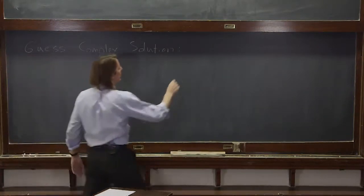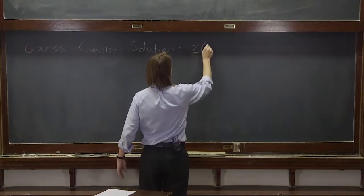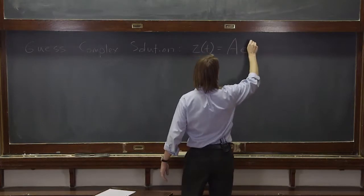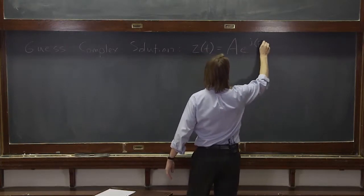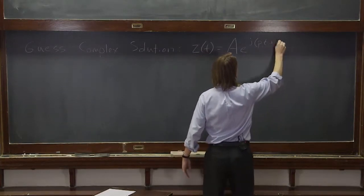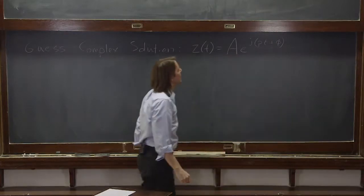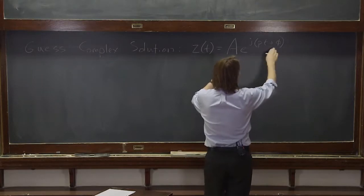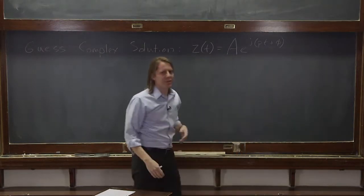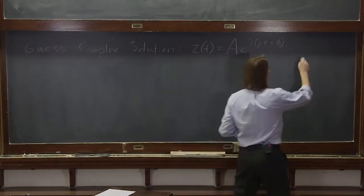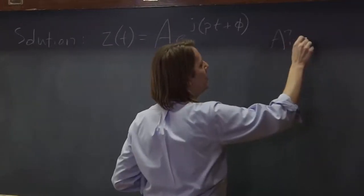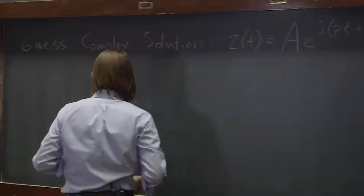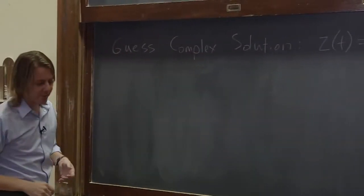What should we guess? Well, why don't we start and say z of t, maybe it'll just go at a different frequency: A e to the j p times t plus phi. So let's assume it's going to oscillate. That's a pretty good oscillator. Some amplitude, some phase p, and some phase offset phi. And we're looking for what's the amplitude, what's the phase, and what's phi? And if we plug it in, maybe it'll tell us.